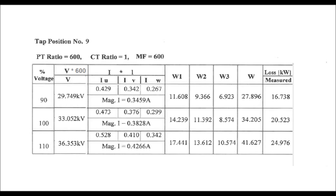At 100% rated voltage (33.052 kV), the average magnetizing current is 0.3828 A and the summation of wattmeter readings gives 20.523 kW. At 110% rated voltage (36.353 kV), the average magnetizing current is 0.4266 A and the summation of wattmeter readings gives 24.976 kW. As voltage is gradually increased from 90% to 100% to 110%, both the magnetizing current and no-load losses increase, showing that no-load losses are approximately proportional to the applied voltage.